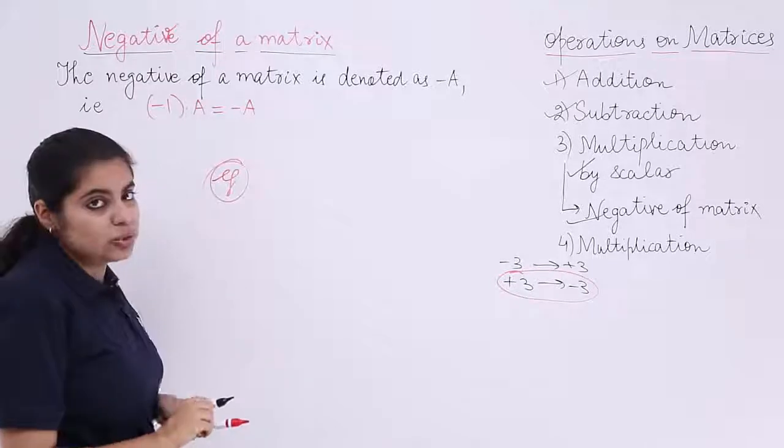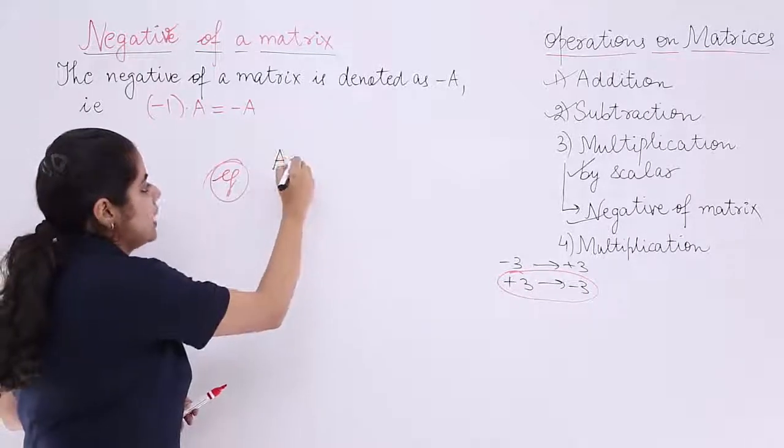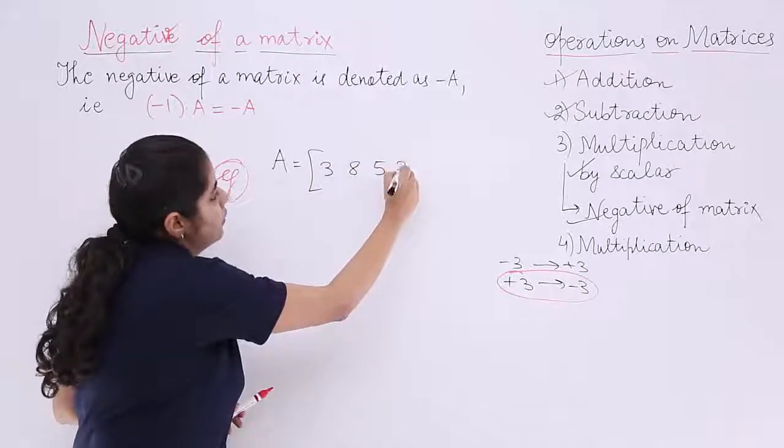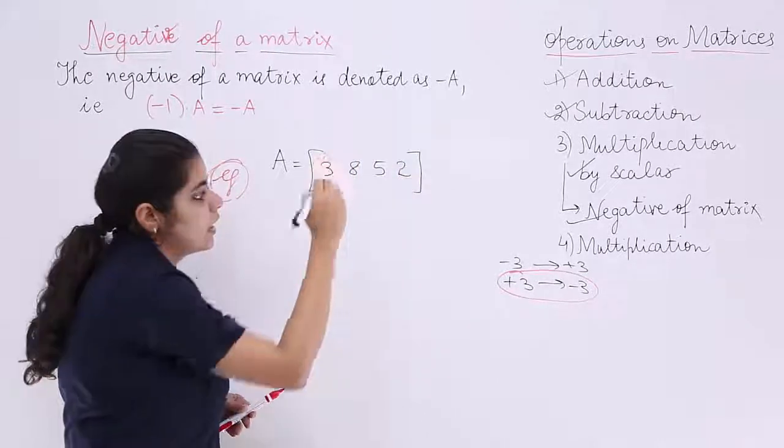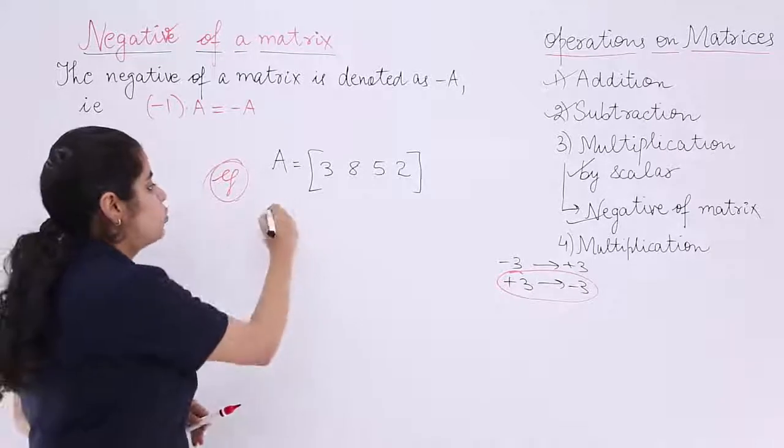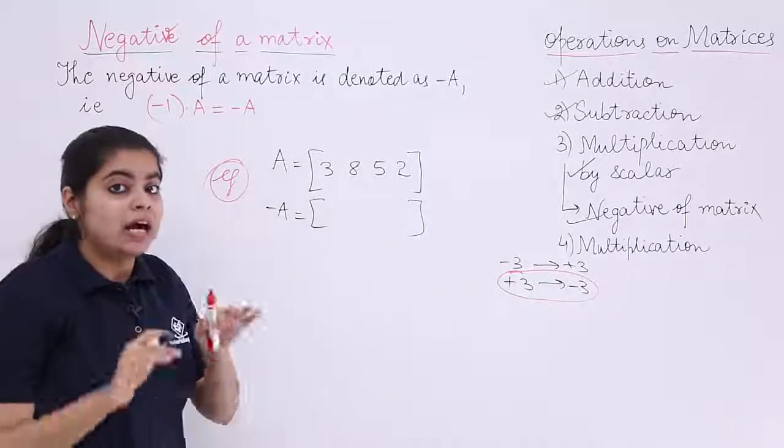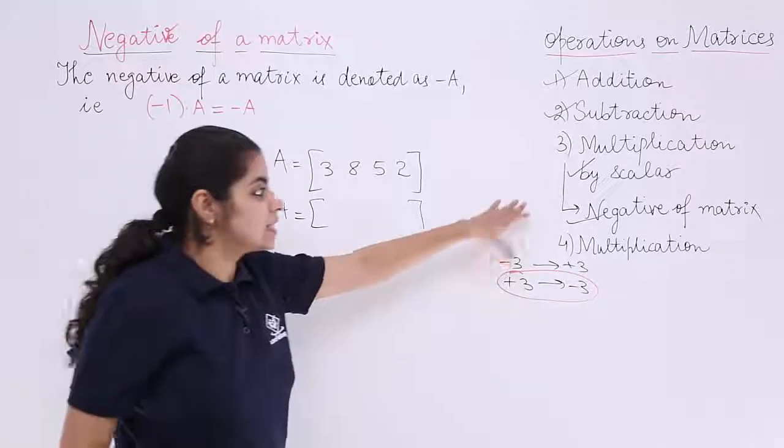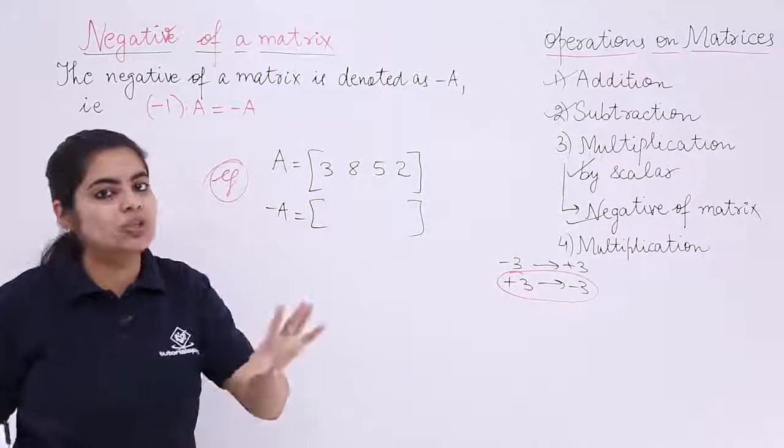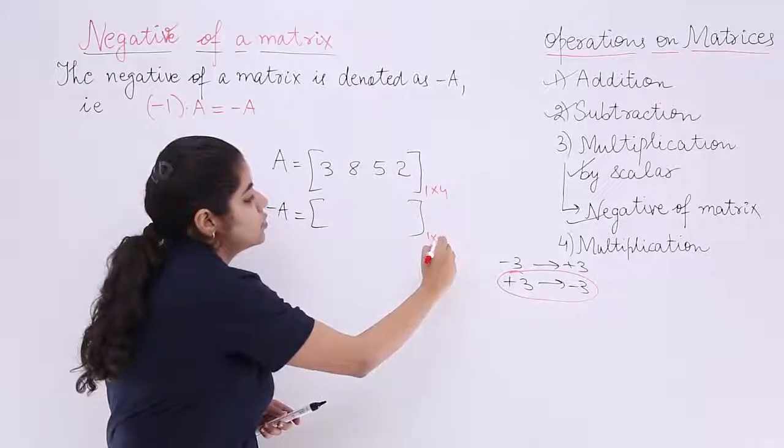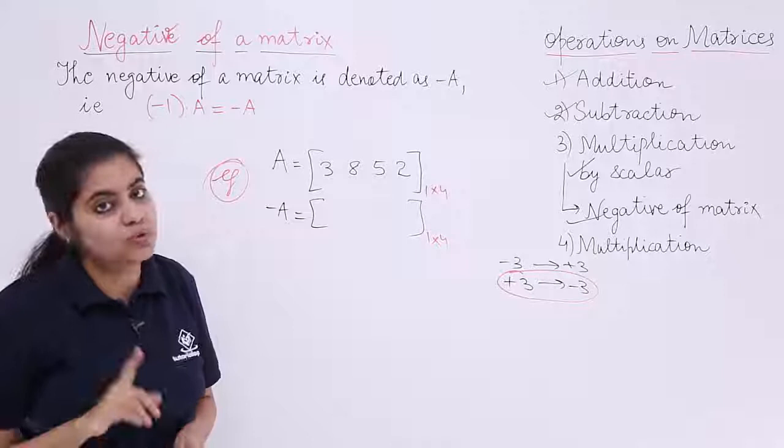An example to this is I have been given a matrix as A and that matrix is 3, 8, 5, 2. And I am supposed to find out minus A, that means the negative of the matrix. Again, as in the previous case, scalar multiplication, the order does not change, it remains intact. So what was the order here? 1 row 4 columns, so here also it is 1 row 4 columns only.